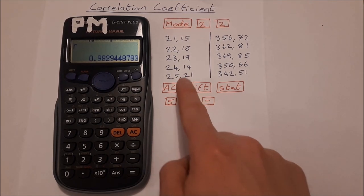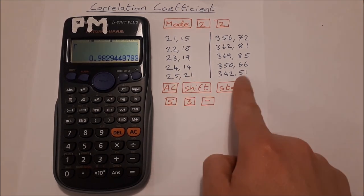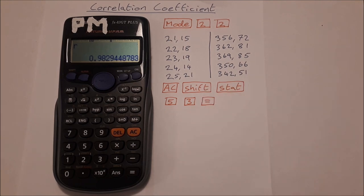The best thing you can do now is to try these yourself, so input this data here, calculate the correlation coefficient, input this data and calculate the correlation coefficient. Double check that you get the same answers that I did, and if you have any questions just ask in the comments below. Thanks for watching and I'll see you in the next video.